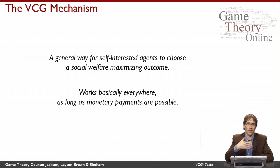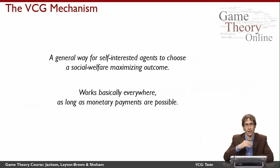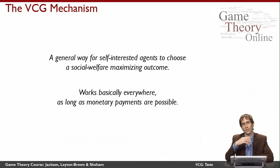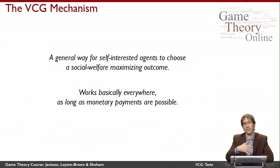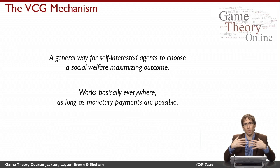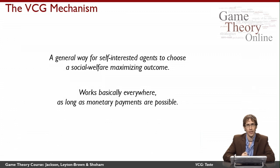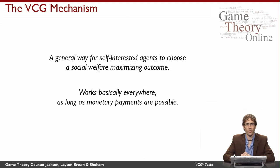This would all be fine, except that the agents could lie to me about how much they value different things. So in a transferable utility setting, I want to impose a set of payments that make it the right thing for agents to tell me the truth, so that I can then solve the problem of maximizing the sum of their values. The trick is to set up these payments in the right way so that agents really will want to tell the truth.